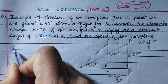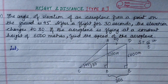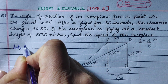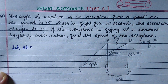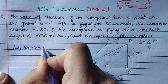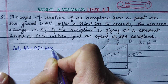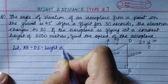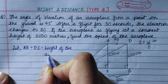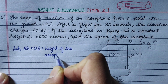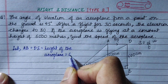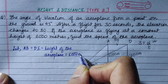So let AB be equal to the height of the aeroplane. The height of the aeroplane is 6,000 meters.